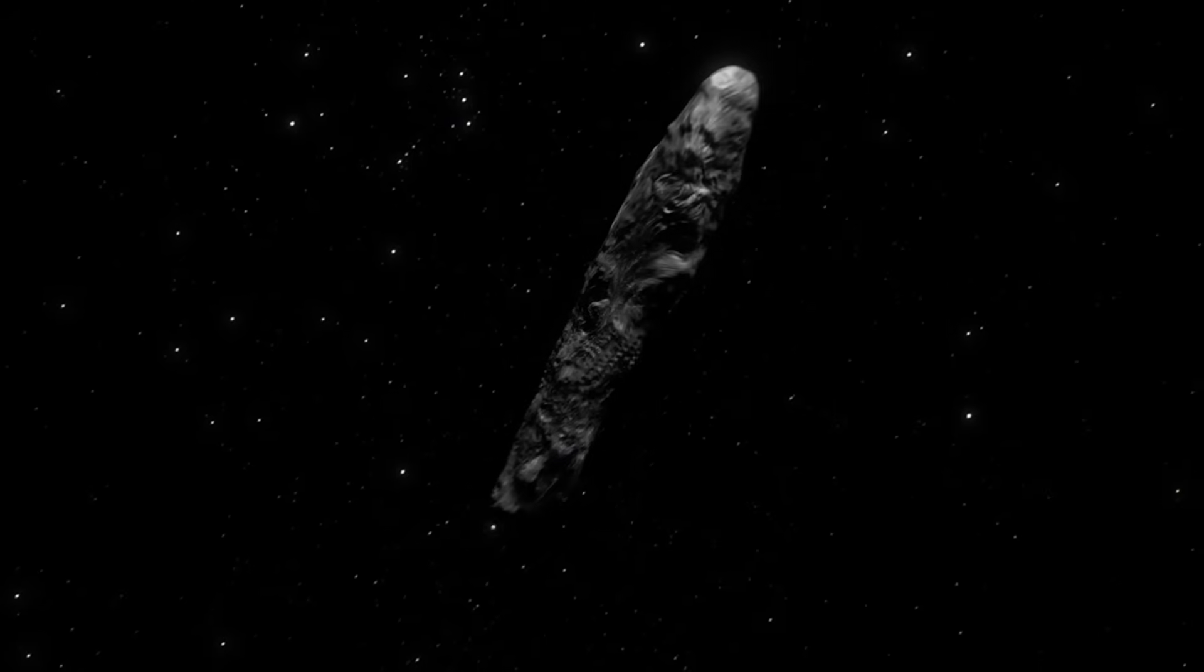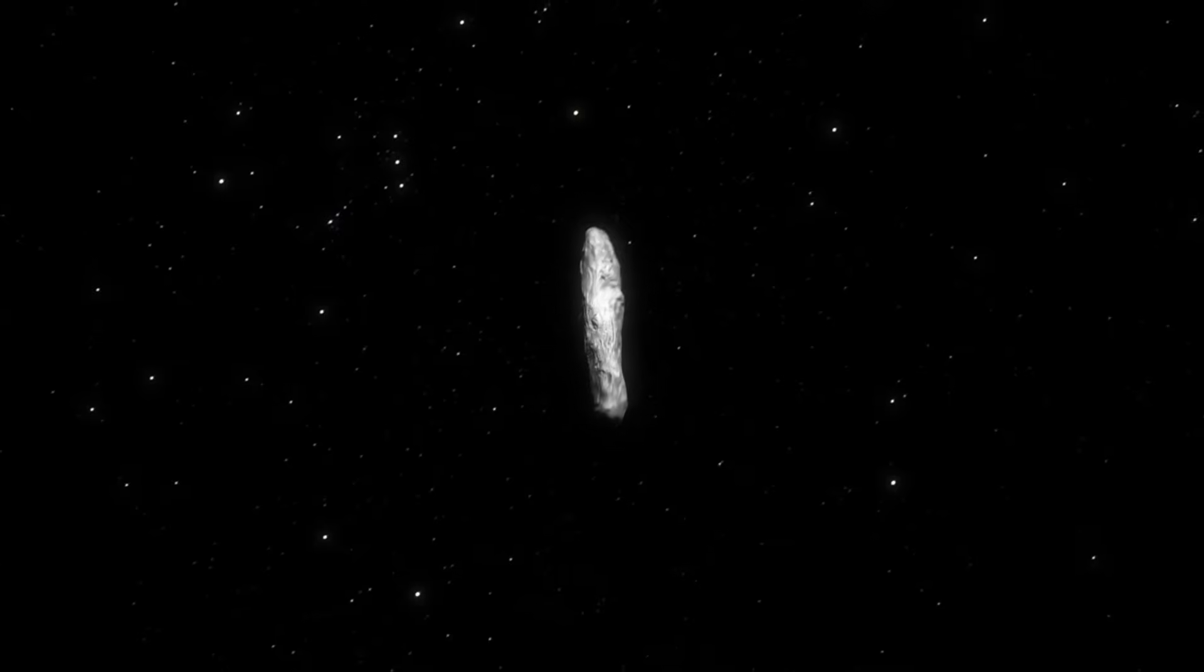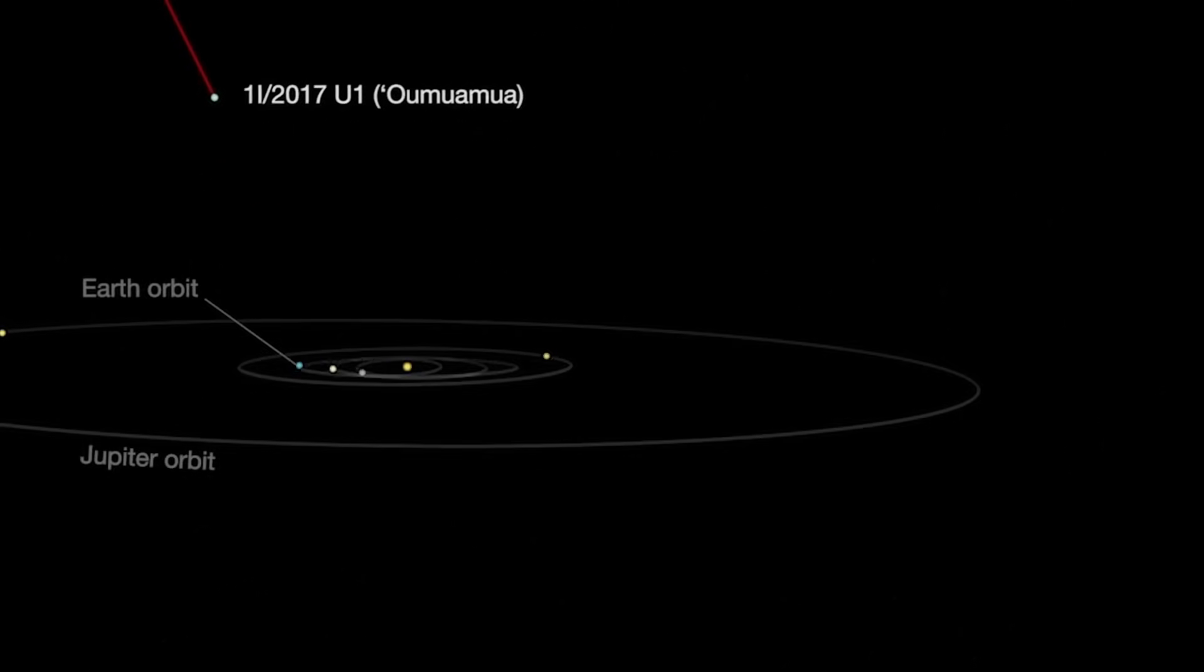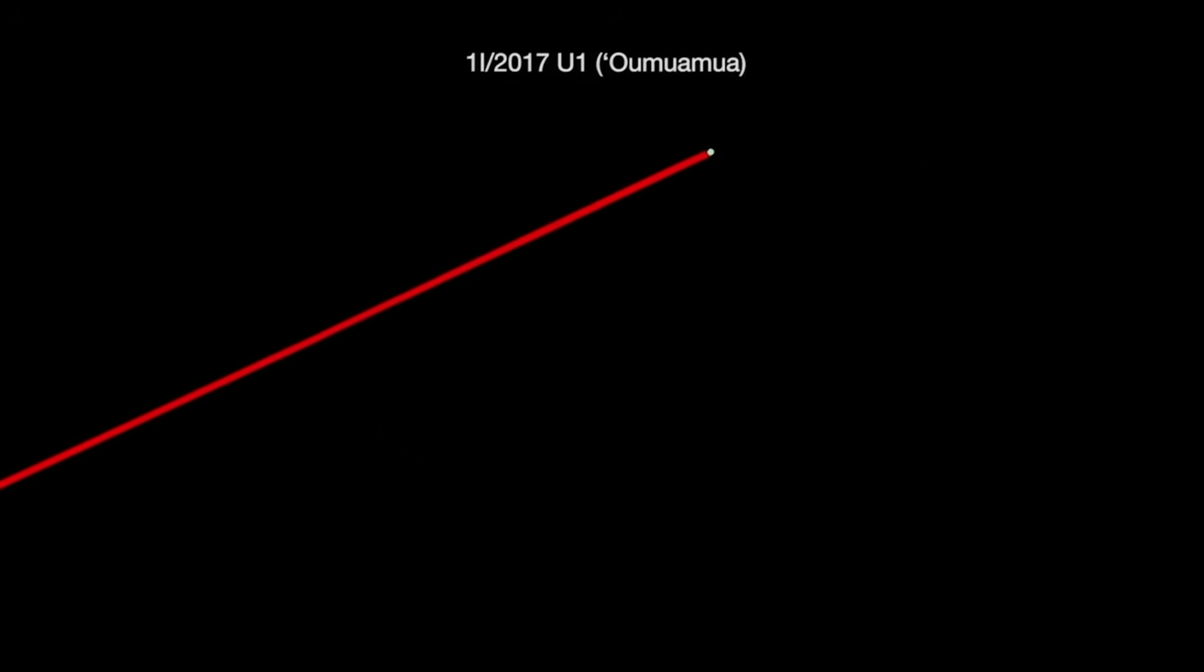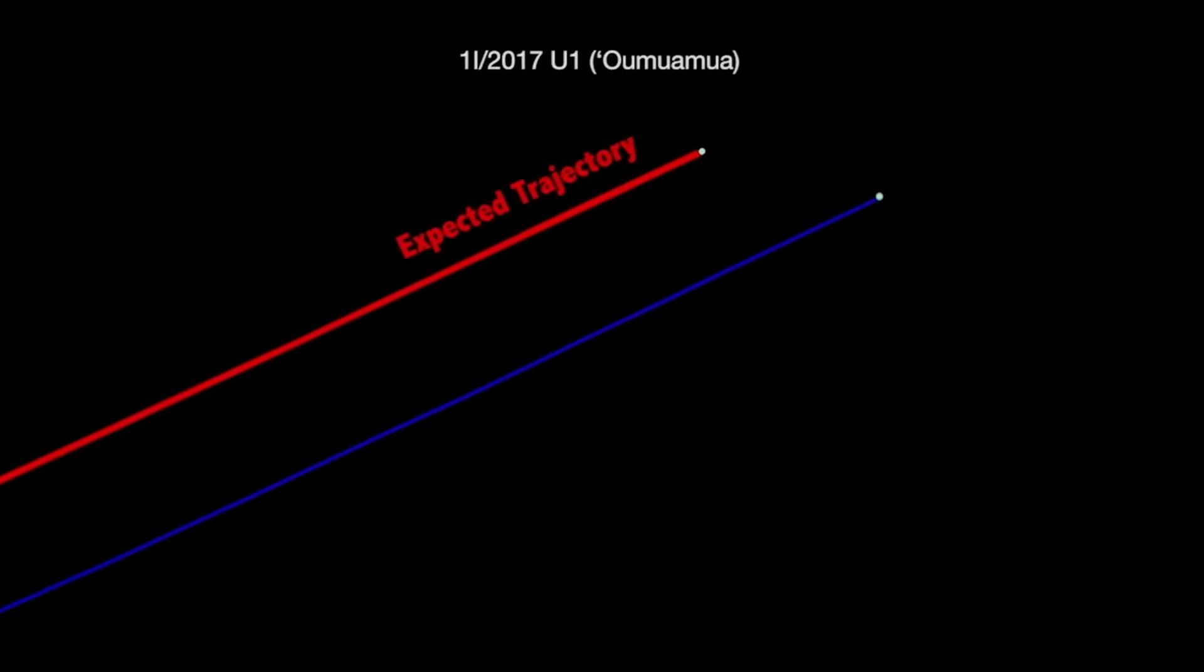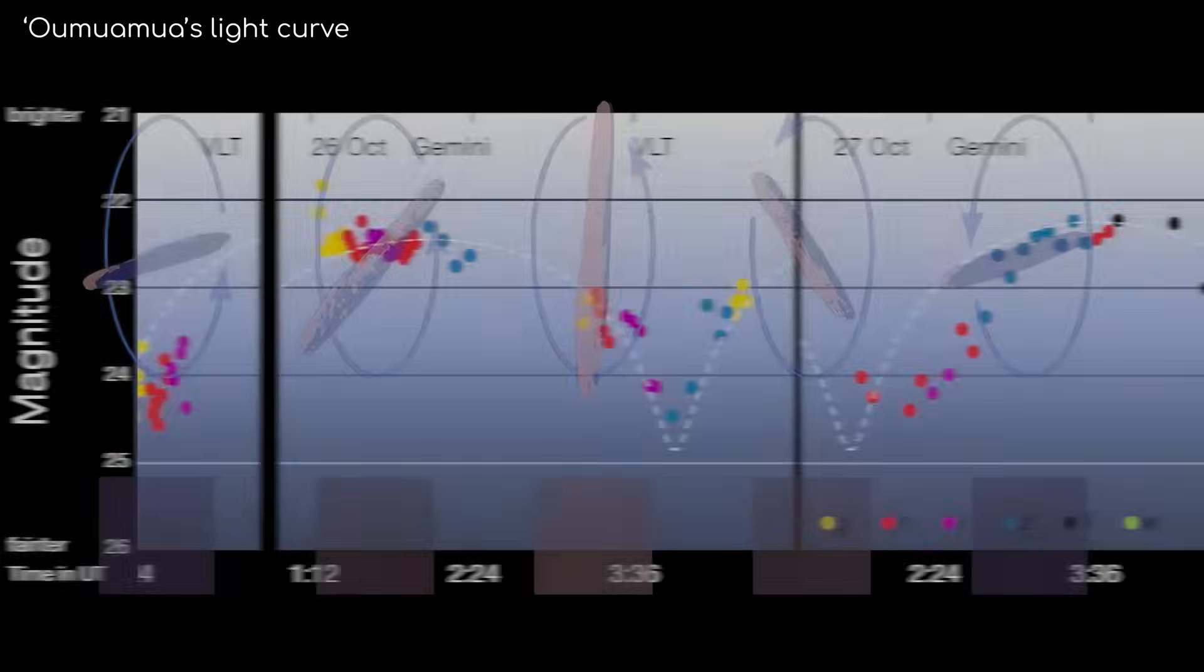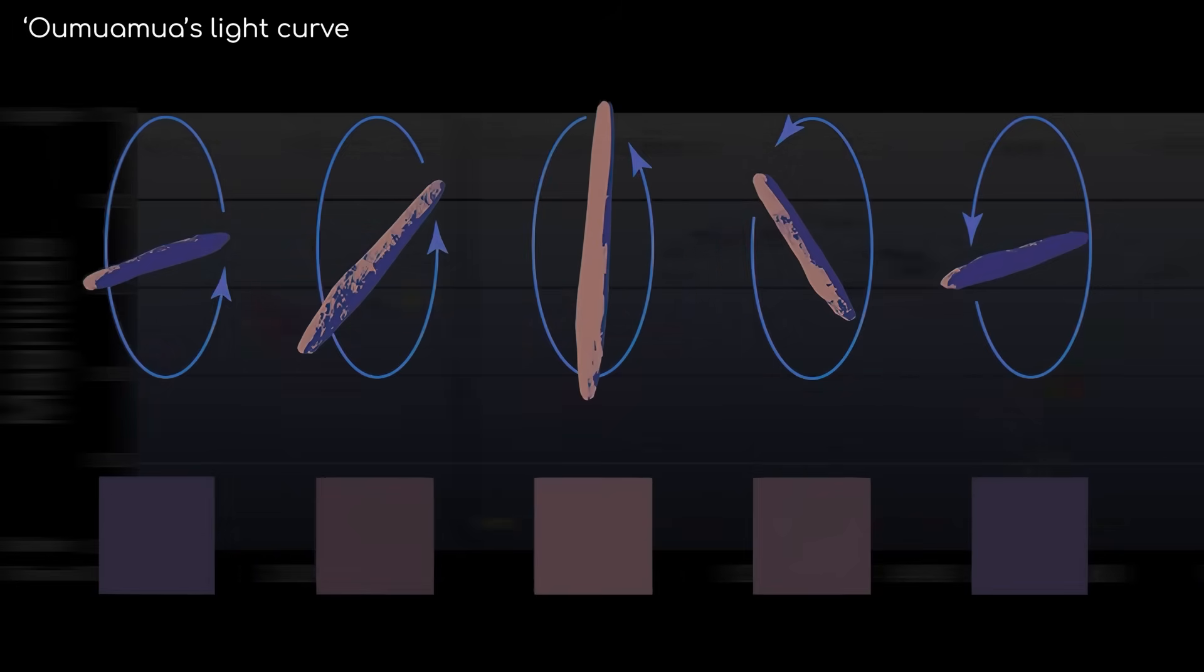So they reclassified it as an asteroid, calling it A-2017U1. Then, they did the math. They plotted its trajectory. And that's when jaws started to drop. This object wasn't from around here. Its path through space was hyperbolic, an open curve, not a closed orbit.